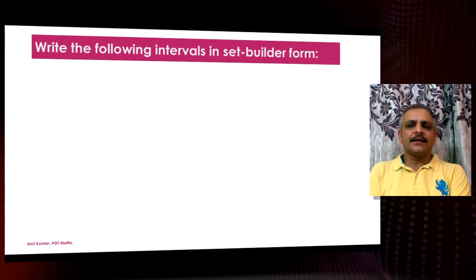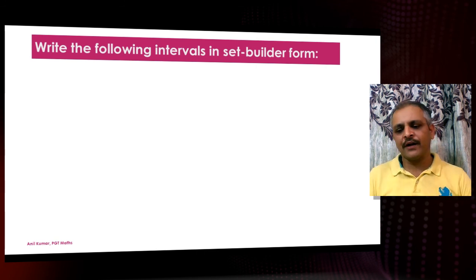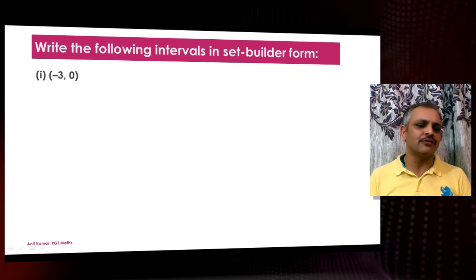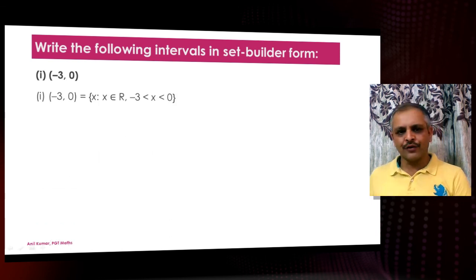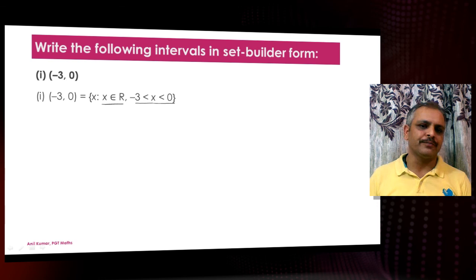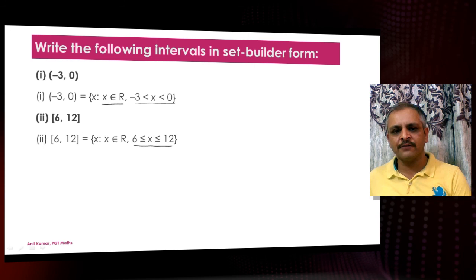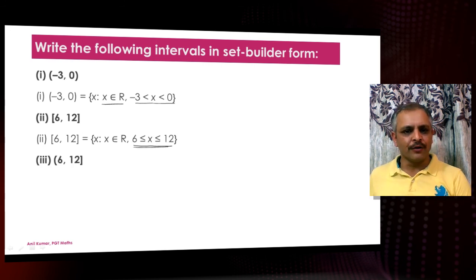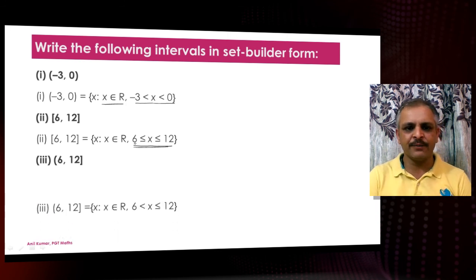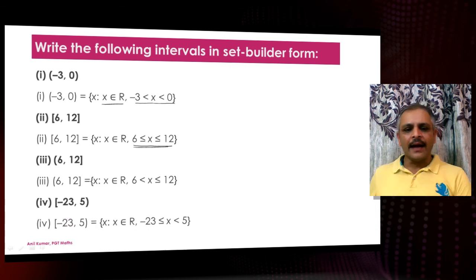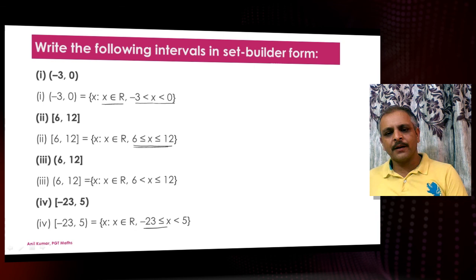Now write the following intervals in set builder form. The interval (-3, 0) has neither -3 nor 0 included, so: {x : x ∈ R, -3 < x < 0}. For [6, 12], both numbers are included: {x : x ∈ R, 6 ≤ x ≤ 12}. If 6 is not included, remove that equal-to sign. For [-23, 5): {x : x ∈ R, -23 ≤ x < 5}.